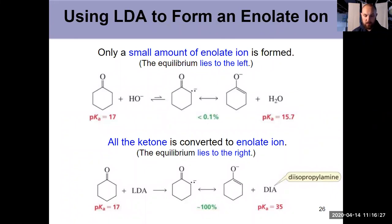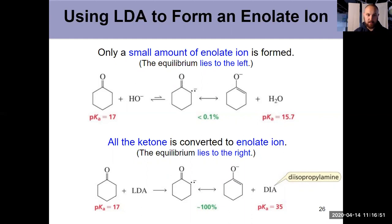This isn't a trivial thing to do because of the tautomerization we discussed in the previous video. If I'm trying to make an enolate ion and I use hydroxide, for example, that's only going to give me 0.1% of my enolate because in this situation, water is produced, which is a stronger acid than the reactant acid — the ketone in this situation. Our original discussion of acidity in organic chemistry told us that equilibrium is never going to favor a reaction where we're producing a stronger acid.